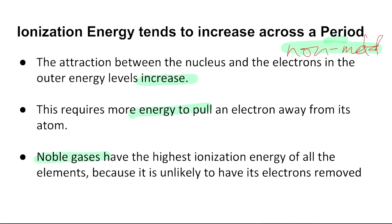Noble gases, as we said before, have the highest ionization energy of all the elements because it is unlikely to have its electrons removed. Why is it going to remove it? So if you want to remove an electron from a noble gas that has already reached its stable octet, it would require a tremendous amount of energy for it to actually take place.